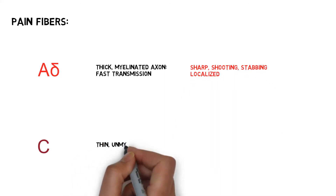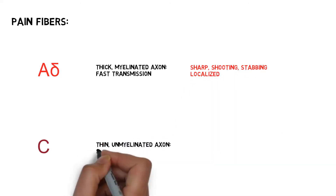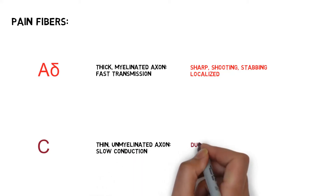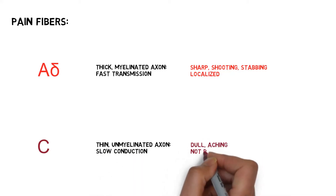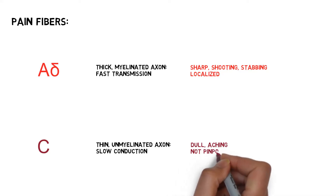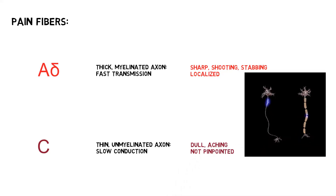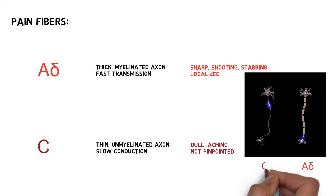The C-fiber is a thin, unmyelinated fiber that is therefore slower in conduction. The pain felt by this receptor is dull, achy, and not easily pinpointed. This is the mechanism when someone says that their arm hurts but they cannot point to a specific area — it is more like the whole area hurts with a deep ache.